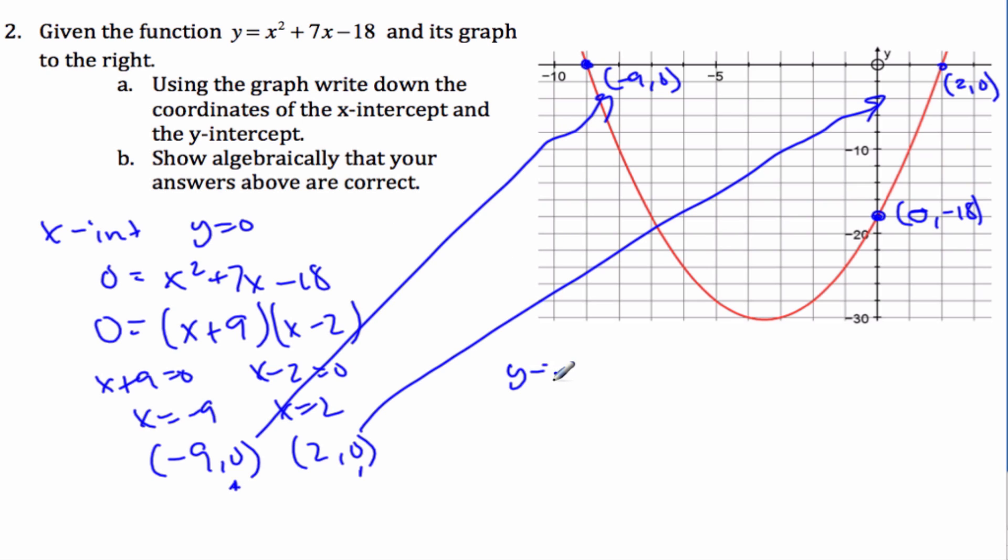Now for my y-intercept, I let x equal 0. And so y is equal to 0² + 7 times 0 - 18, which is -18. And so I have 0 is x, -18 is y, and that is my y-intercept.